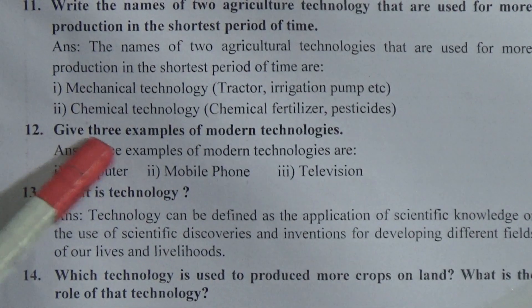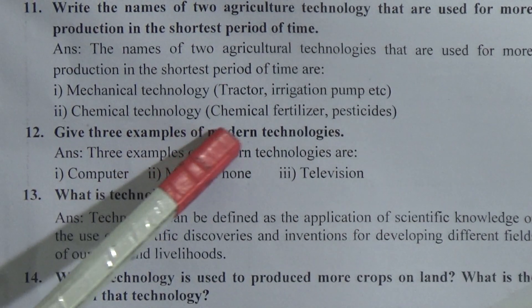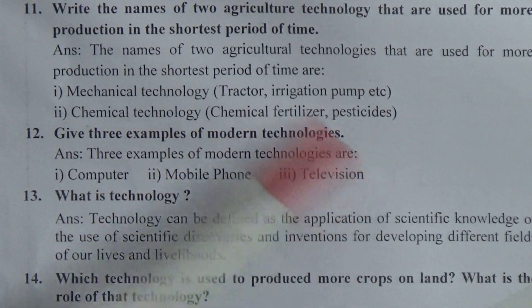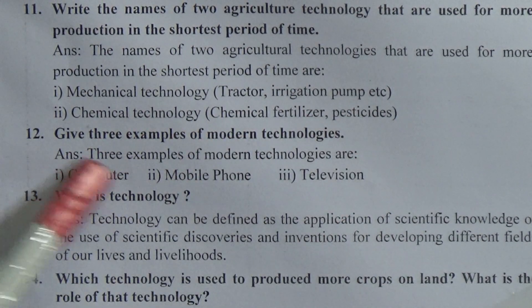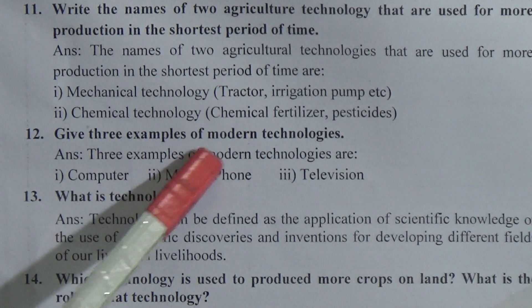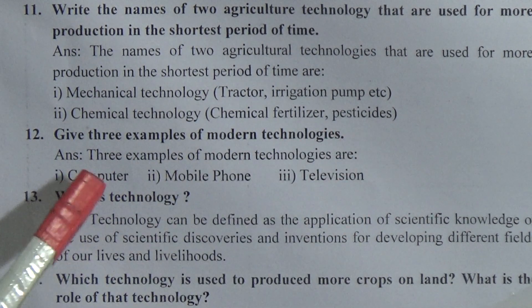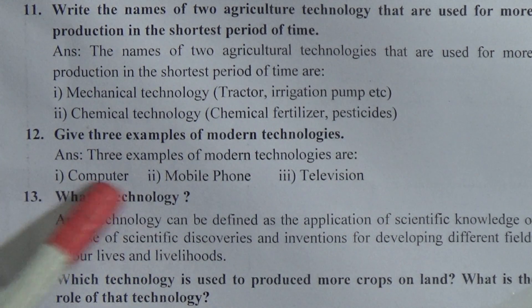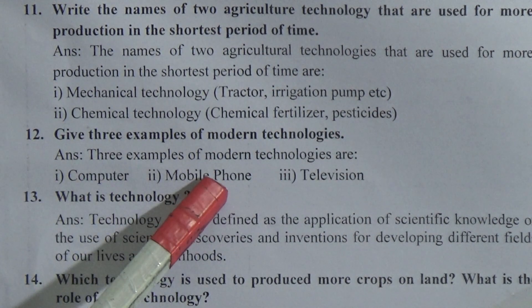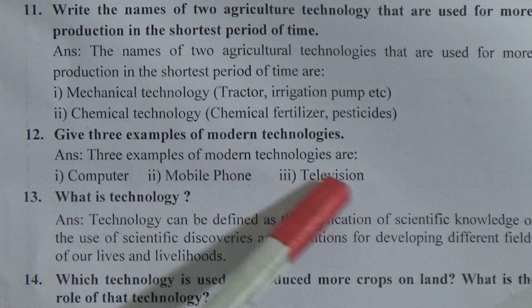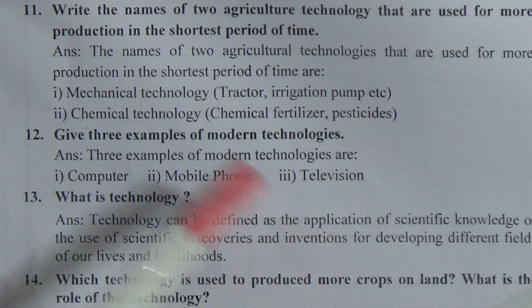Question 12: Give three examples of modern technology. Answer: Three examples of modern technologies are: first, computer; second, mobile phone; third, television.